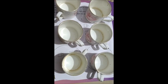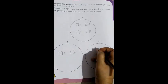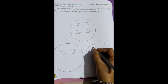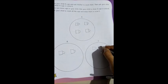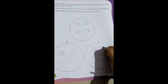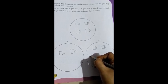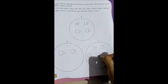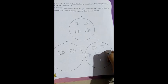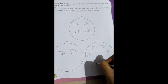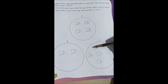Now what will we do? We will tell them to draw the cups in circle C. So how many cups will we draw? 6 cups we are going to draw in circle C. So 4 cups from circle A — 1, 2, 3 and 4 — and 2 cups from circle B. All together, how many cups? Let's count: 1, 2, 3, 4, 5 and 6.